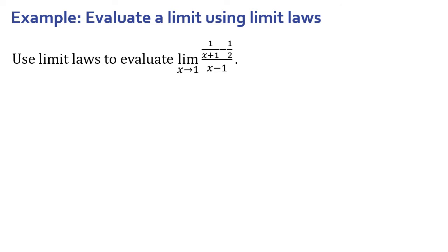Use the limit laws to evaluate the limit as x approaches one of one over the quantity x plus one, minus one half, all over x minus one. In this situation, I have what's called a complex fraction — a fraction within a fraction. Let's see if we can first just substitute one in for x. In the numerator I get one half minus one half, which is zero. In the denominator I get one minus one, which is zero. We're in that indeterminate form, so let's use those problem-solving strategies to solve this.